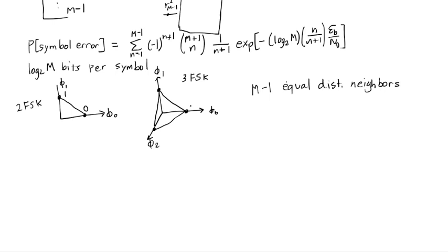But if I was sending 4 FSK, I would be sending 00, 01, 10, and 11 in the fourth dimension. That fourth dimensional symbol that I can't really draw is equally distant to the other three symbols.